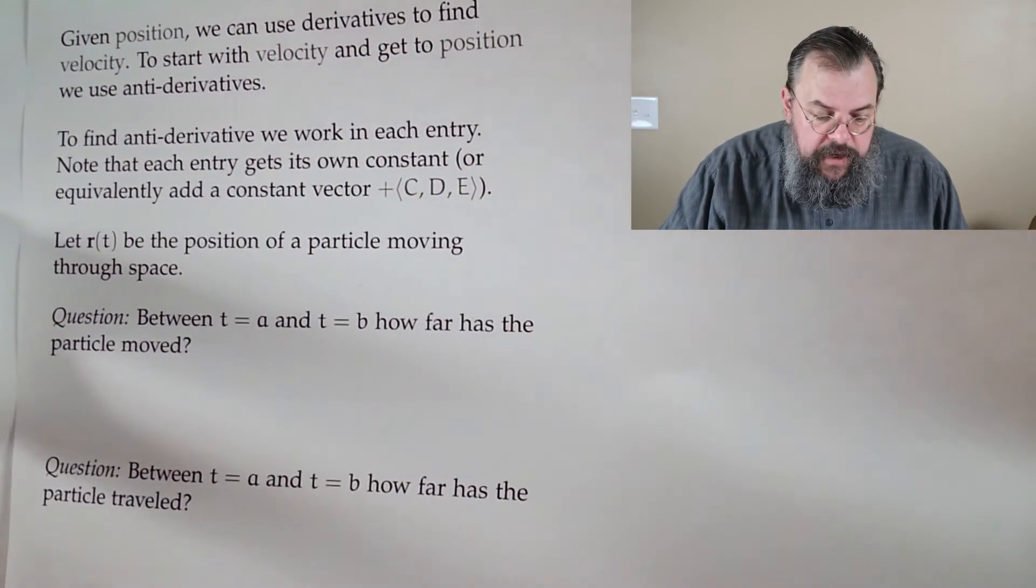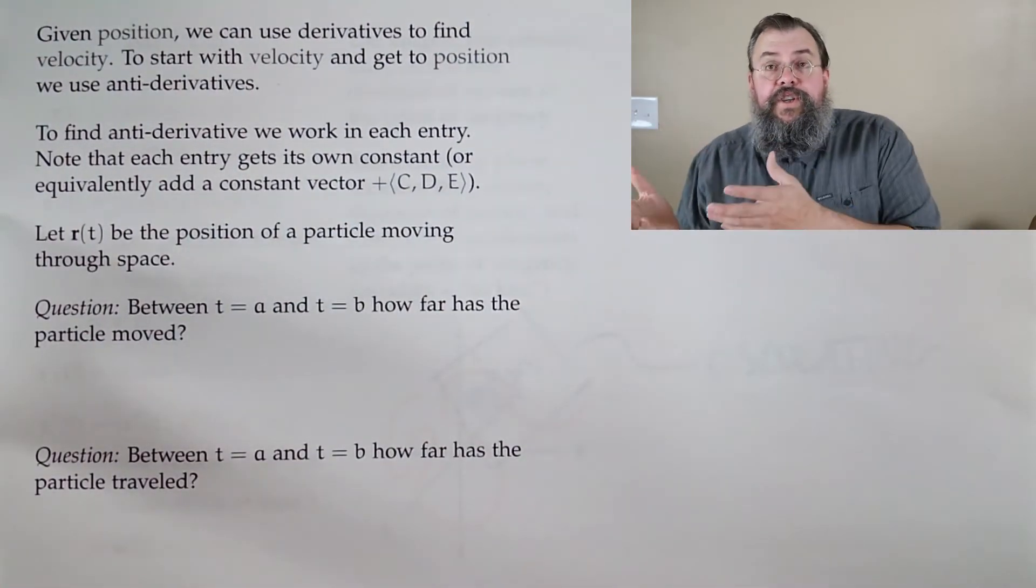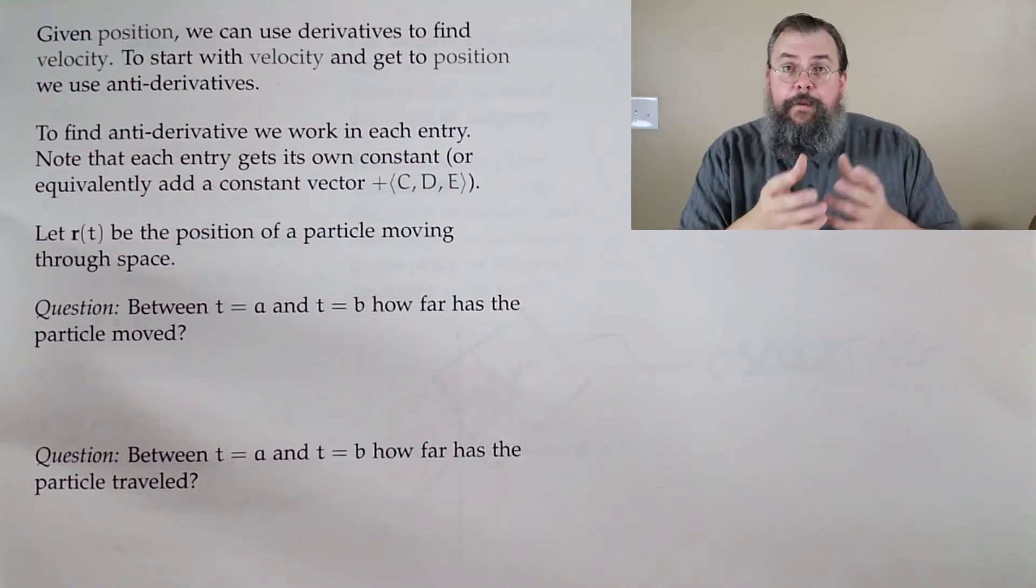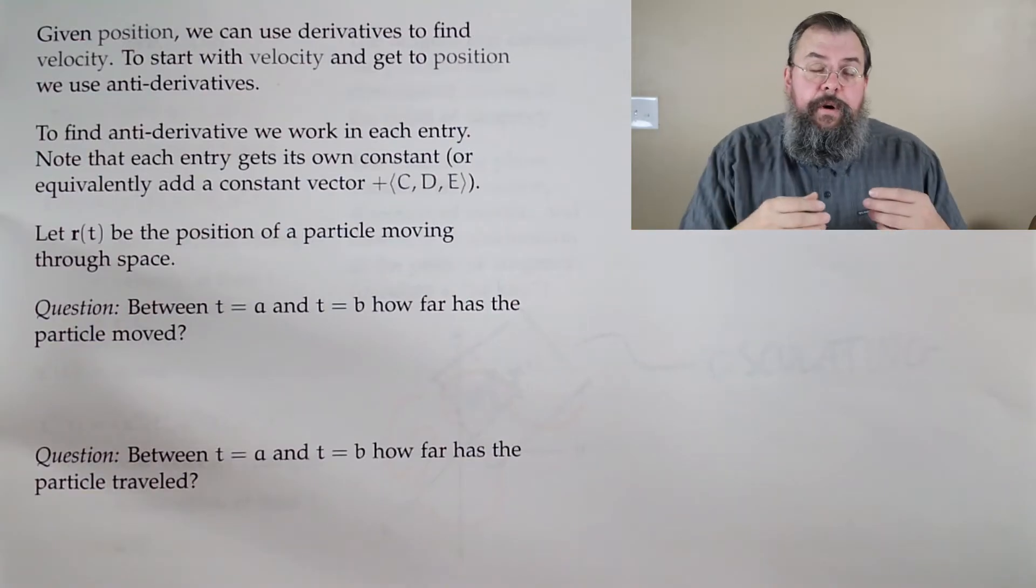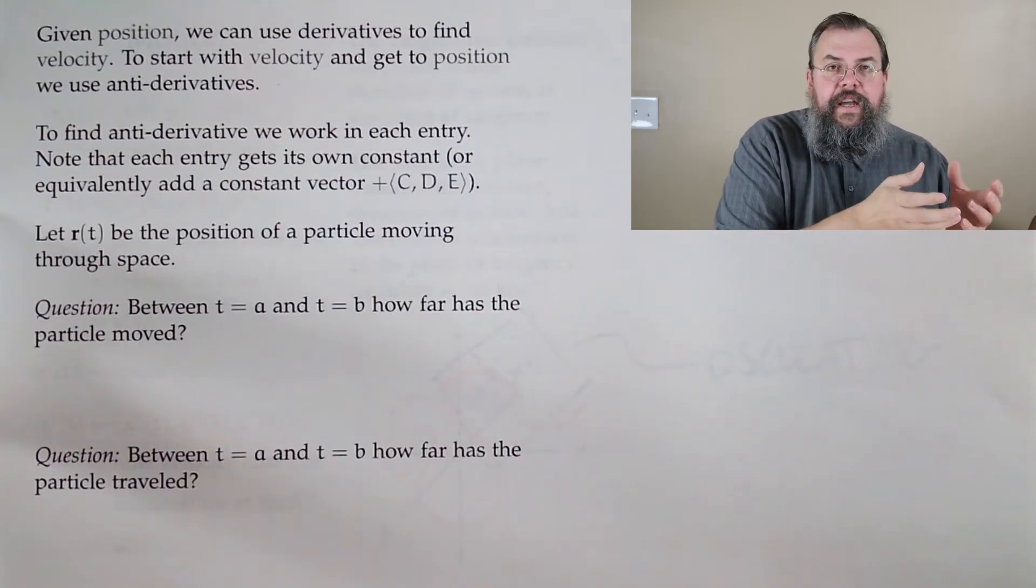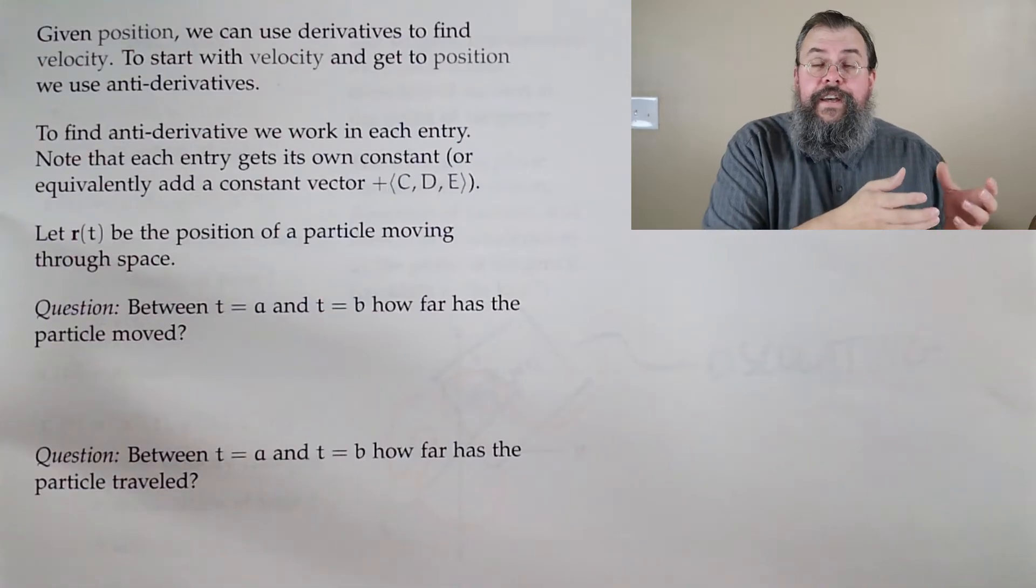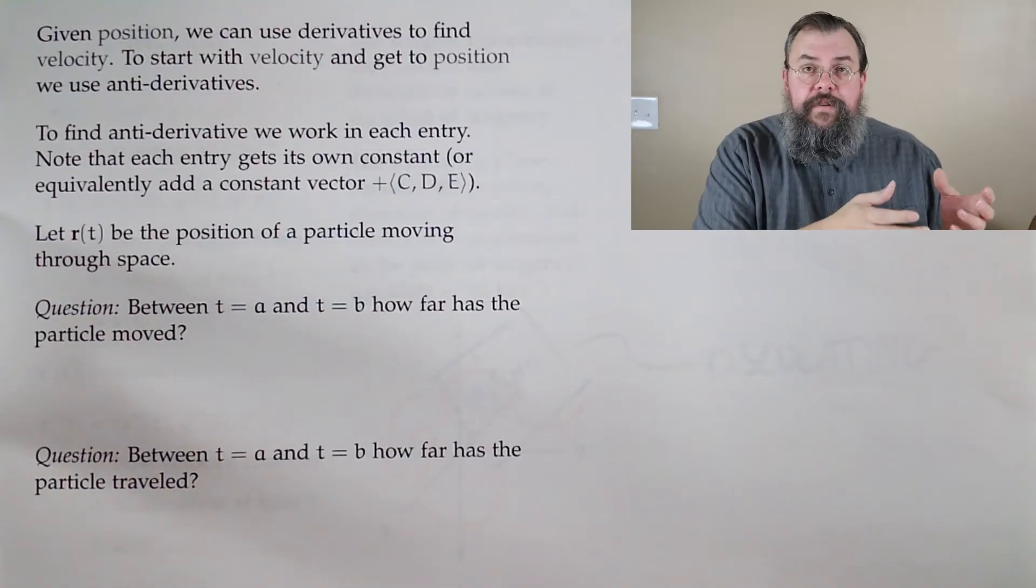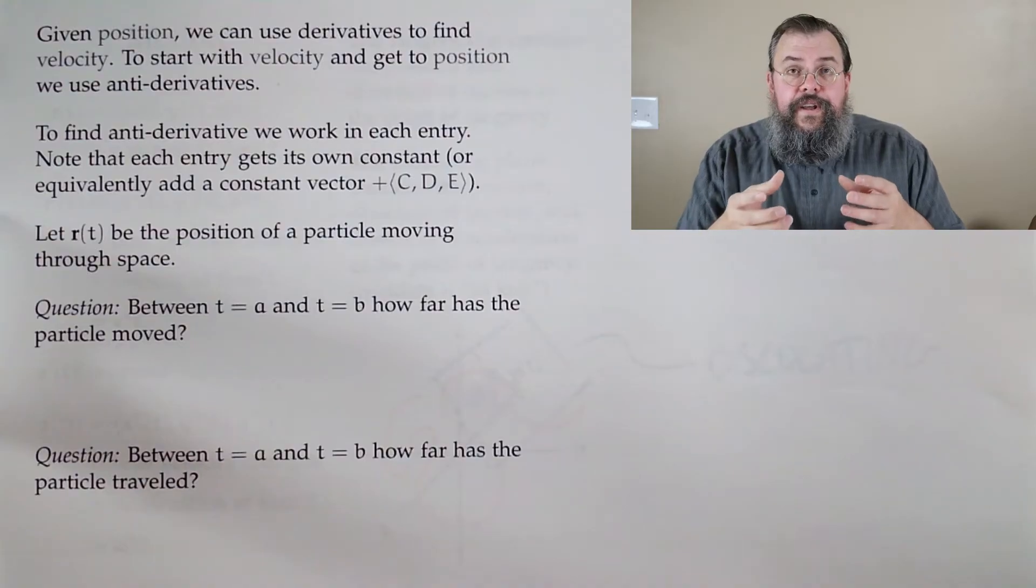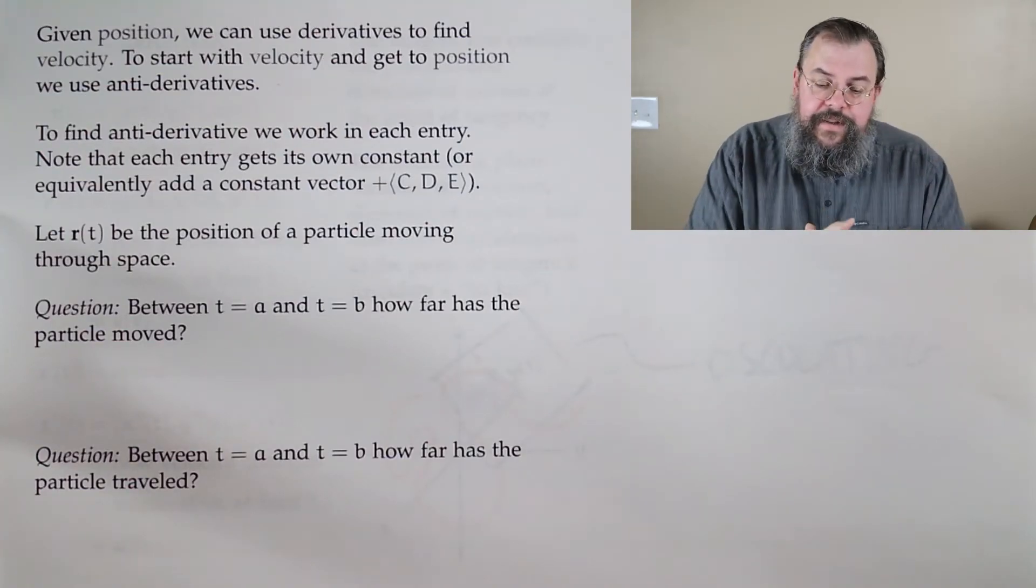Now you might say, okay, I can go in some sense forward. That is, you give me a position, I can find velocity by taking derivative. I can find acceleration by taking two derivatives. Can I work back up? Well, yeah. The way we got from position to velocity to acceleration was taking derivatives. So now we're just going to do the opposite of taking derivatives. We call that anti-derivatives. So we can say, take the anti-derivative of acceleration, velocity, anti-derivative of velocity, position, and so forth and so on.